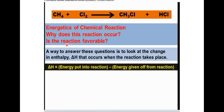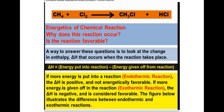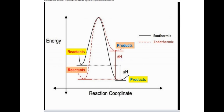Why does a chemical reaction occur, and why is the reaction favorable? We can answer these questions from the enthalpy change of a reaction. If more energy is put into the reaction, it is endothermic, delta H is positive, and not energetically favorable. If more energy is given off in the reaction, delta H is negative, and this reaction is thermodynamically favorable.